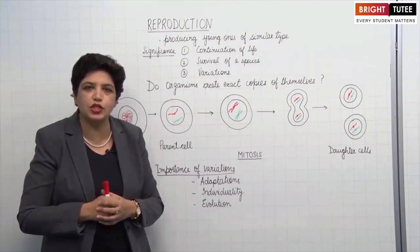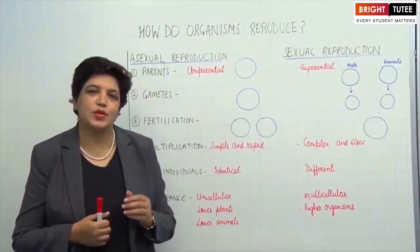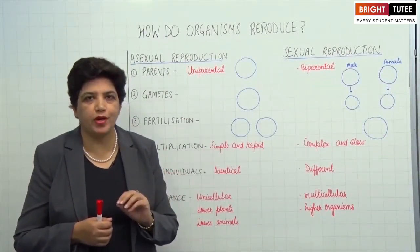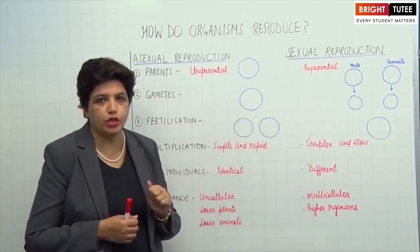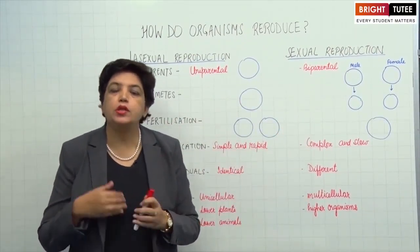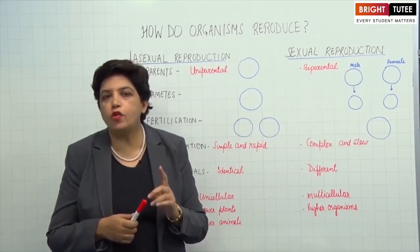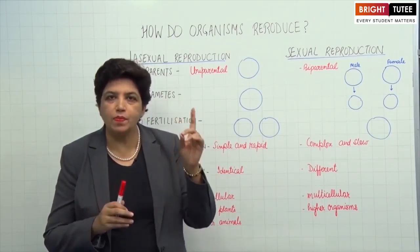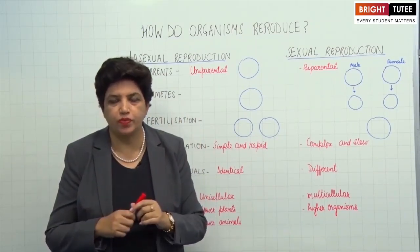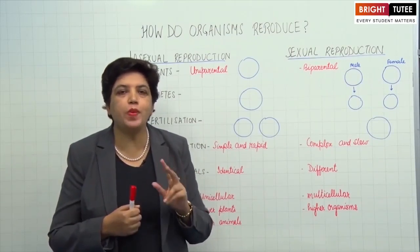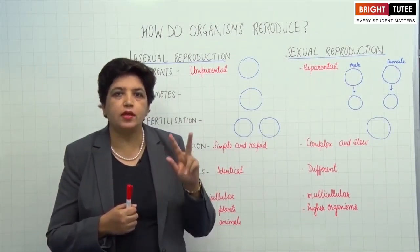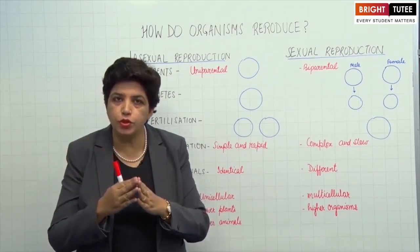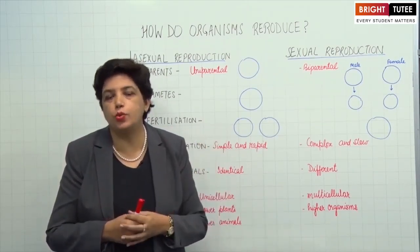Now let us move on to the next section — asexual reproduction. There are two types of reproduction: asexual reproduction and sexual reproduction. In asexual reproduction, the new generation of young ones are formed by the involvement of only one parent, without any formation or fusion of gametes. While in sexual reproduction, two parents are involved — one male and one female — and reproduction occurs by fusion of gametes. One male gamete and one female gamete fuse together to form a new cell which grows into a new individual.